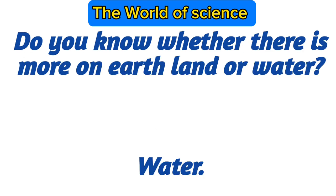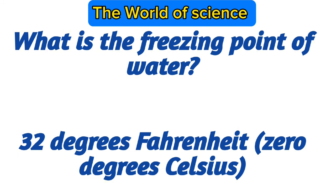Is there more land or water on Earth? Water. What is the freezing point of water? 32 degrees Fahrenheit, zero degrees Celsius.